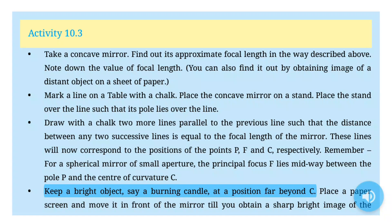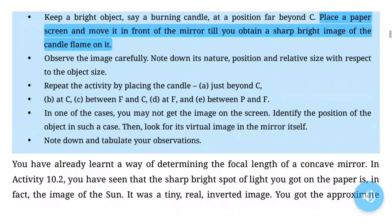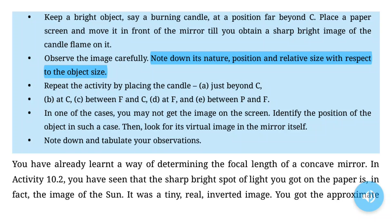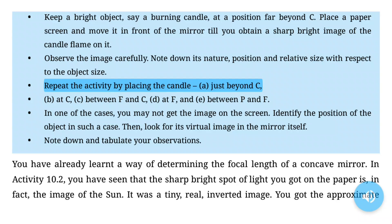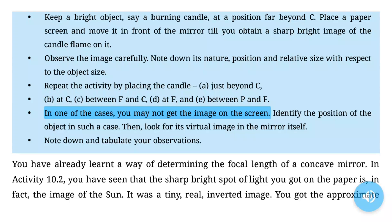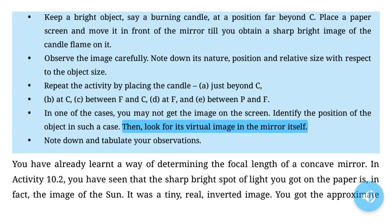Keep a bright object, say a burning candle, at a position far beyond C. Place a paper screen and move it in front of the mirror till you obtain a sharp, bright image of the candle flame on it. Note down its nature, position and relative size with respect to the object size. Repeat the activity by placing the candle: (A) just beyond C, (B) at C, (C) between F and C, (D) at F, and (E) between P and F. In one of the cases you may not get the image on the screen. Then look for its virtual image in the mirror itself.